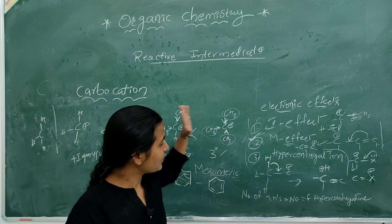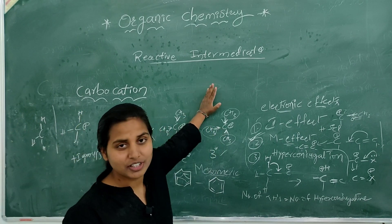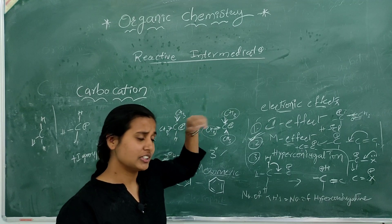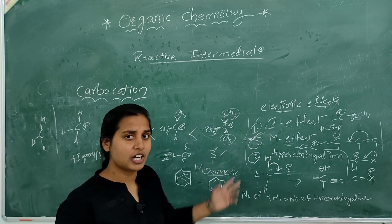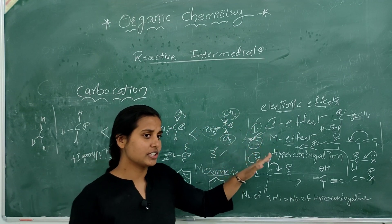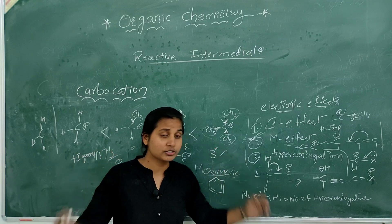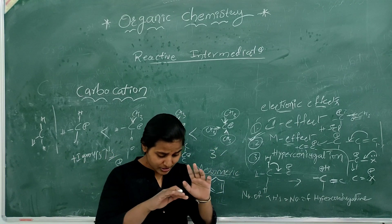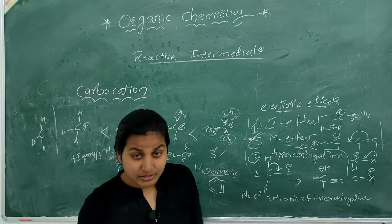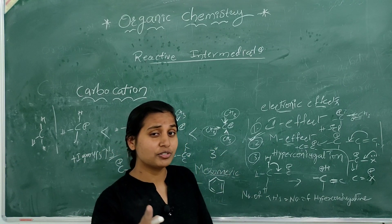So those are the examples and stabilities of carbocations. The stability orders for carbanions and free radicals, and previous years' questions, will be discussed in the next class. All the best — you rock it!